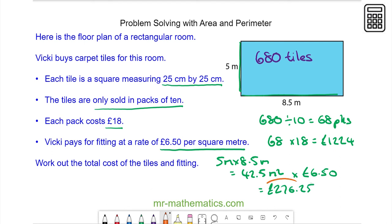I add the fitting to the cost of the tiles, and the total amount is £1,500.25.